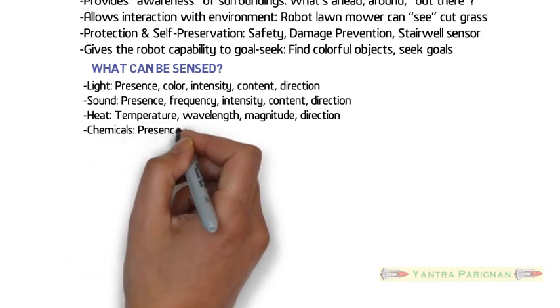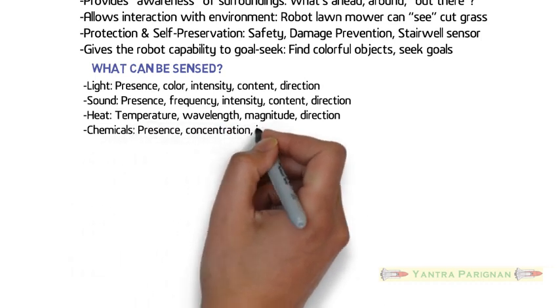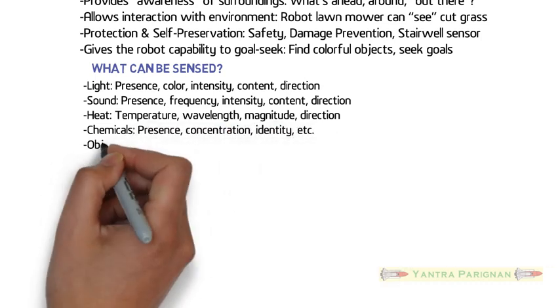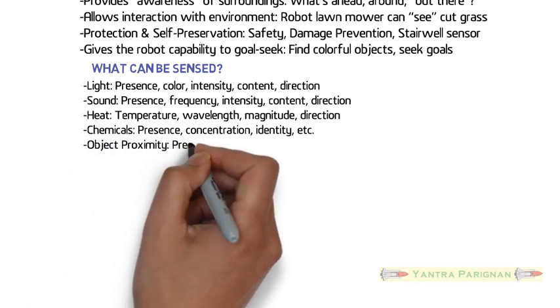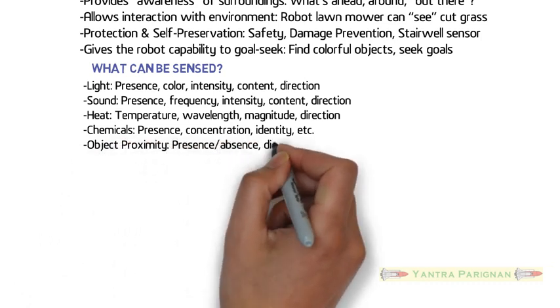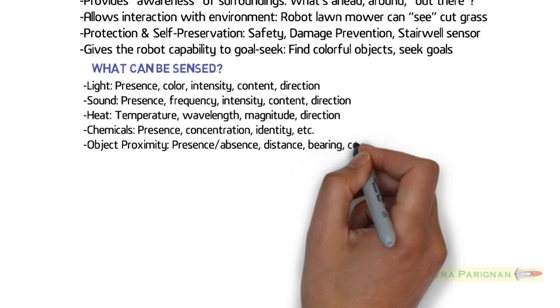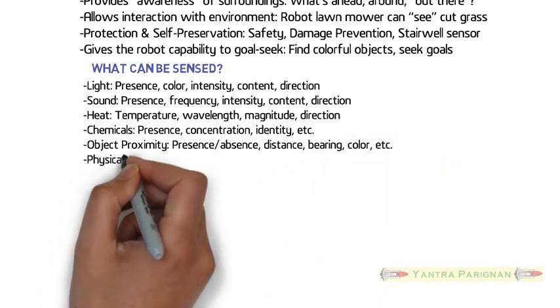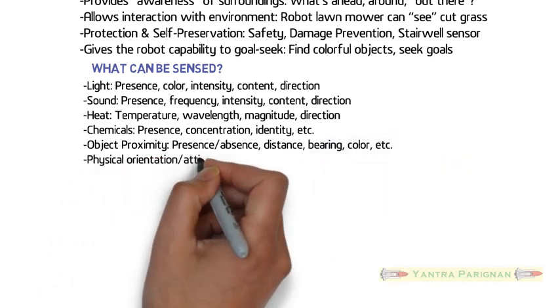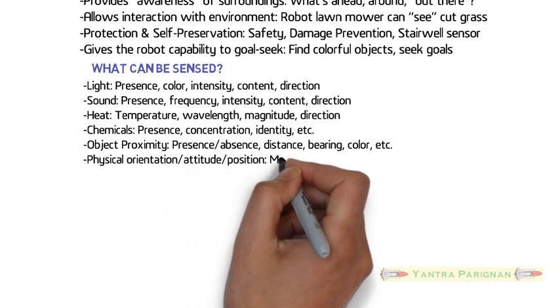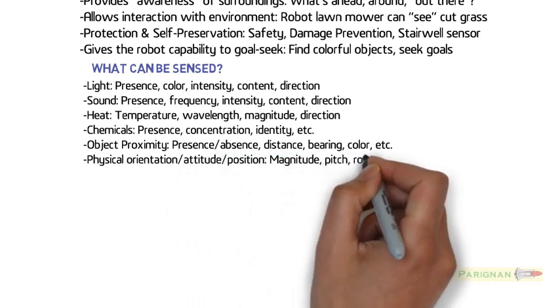Can sense heat, temperature of heat, wavelength of heat, magnitude of heat, and direction of heat. Can sense the presence of chemicals, concentration of chemicals, and can identify the chemical also. Can sense object proximity, presence, absence, distance, bearing, color, etc.